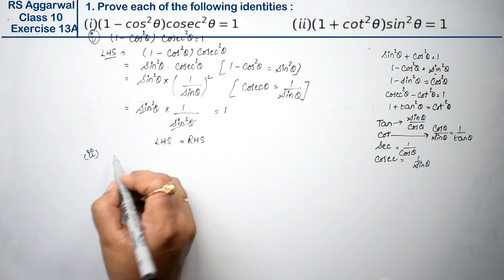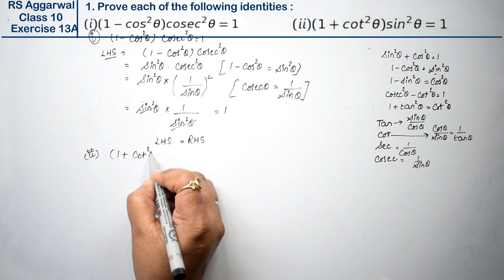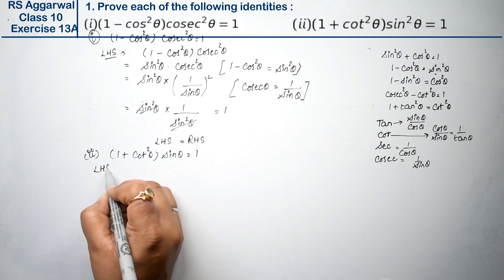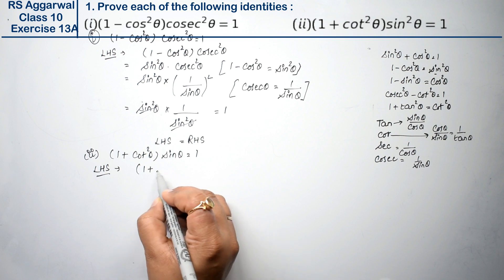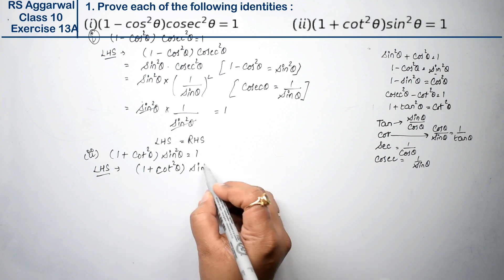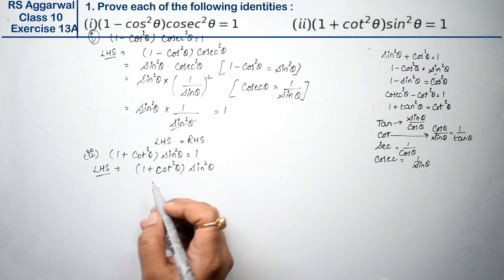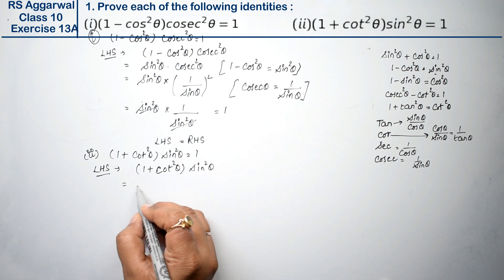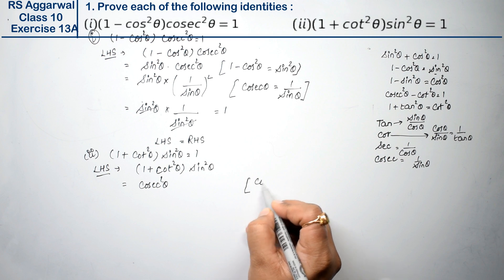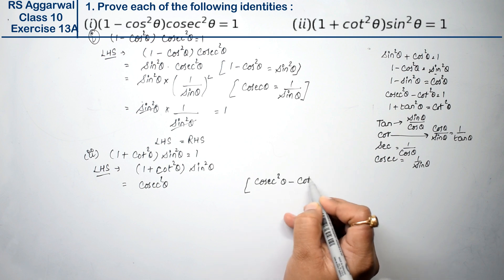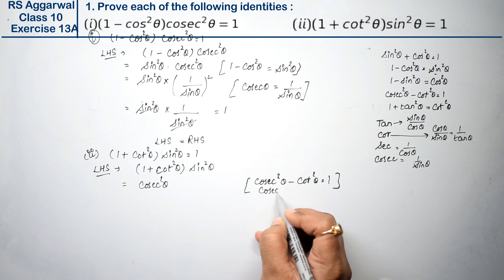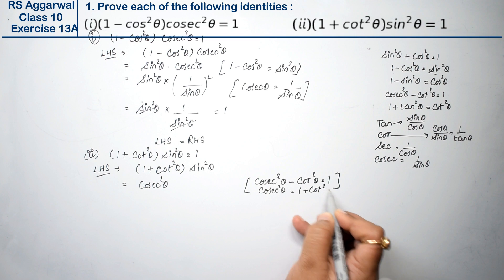Let's do the second part. The second part is: 1 plus cot squared theta times sin squared theta equals 1. Let's take the left-hand side. Left-hand side is: cot squared theta. What can we do? We know that csc squared theta minus cot squared theta equals 1, so cot squared theta equals csc squared theta minus 1. Therefore this becomes: 1 plus csc squared theta minus 1, which gives csc squared theta, into sin squared theta.